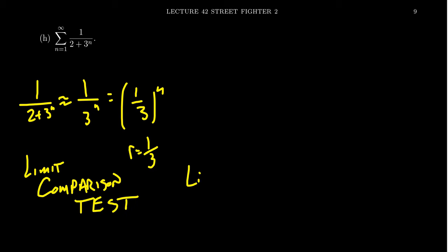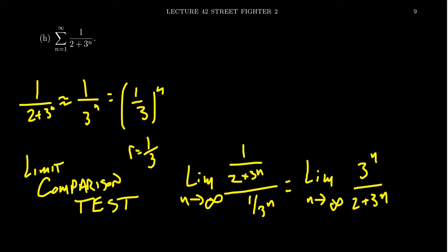In which case, we'd have to evaluate the limit as n goes to infinity of the sequence 1 over 2 plus 3 to the n over 1 over 3 to the n. You want to simplify that thing. You end up with the limit as n goes to infinity of 3 to the n over 2 plus 3 to the n here.